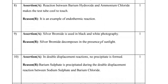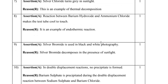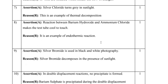Question 8: The reaction between barium hydroxide and ammonium chloride makes the test tube cool to touch. This is correct — it is an example of an endothermic reaction, which absorbs heat from the surroundings, making the test tube cool. Both assertion and reason are correct, so A is the answer.